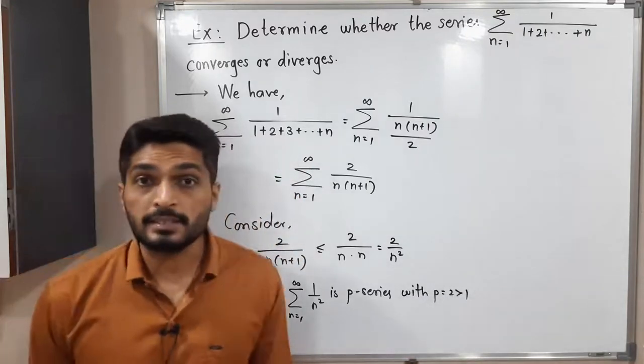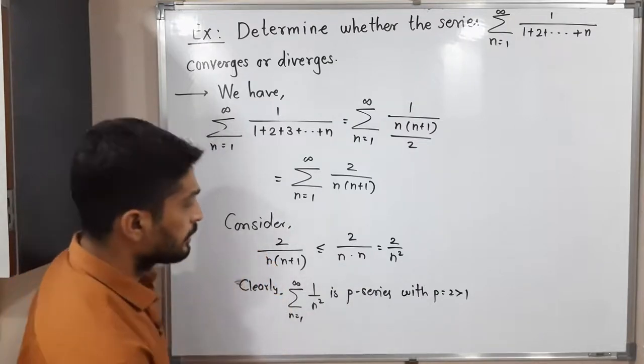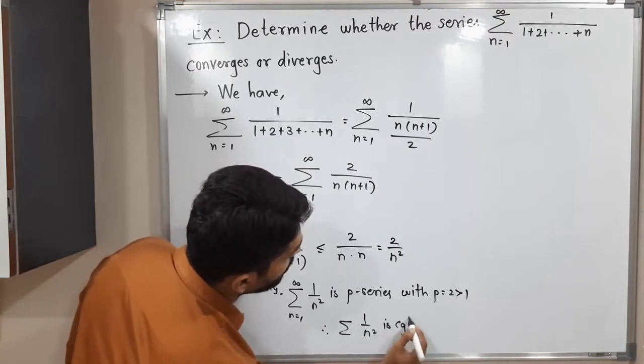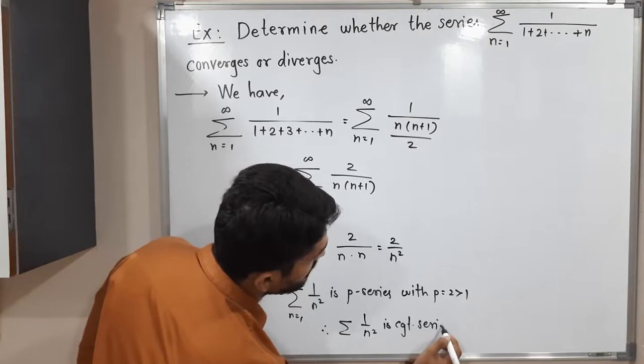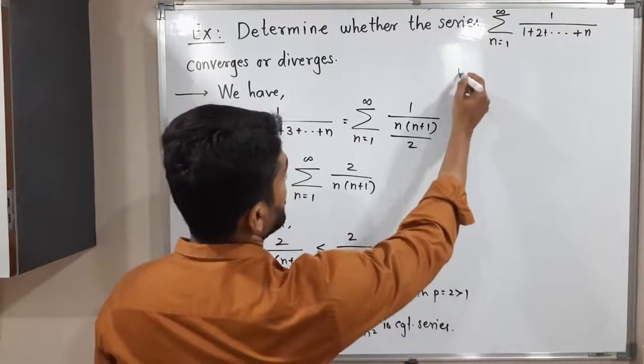We know that when we have a p-series with p greater than 1, it is a convergent series. Therefore summation 1/n² is a convergent series. We have this convergent series.